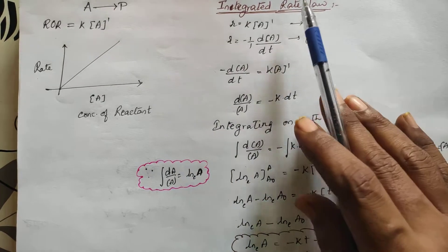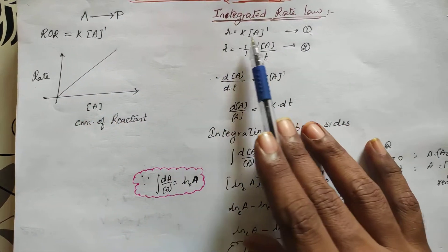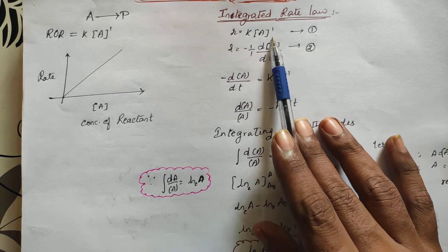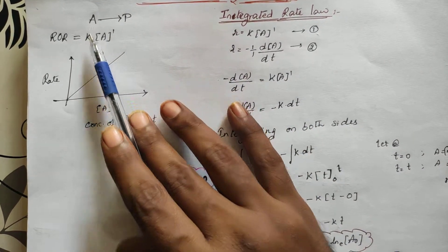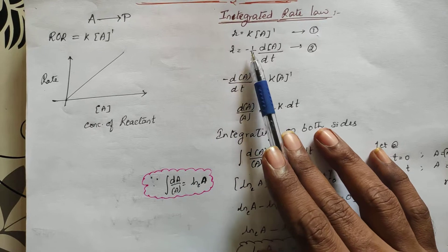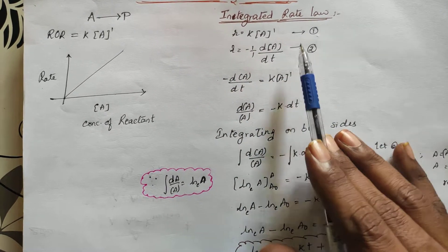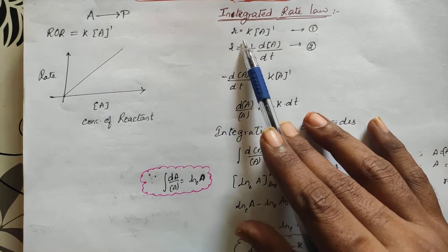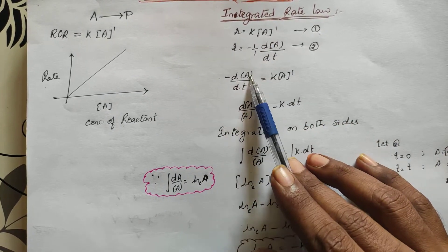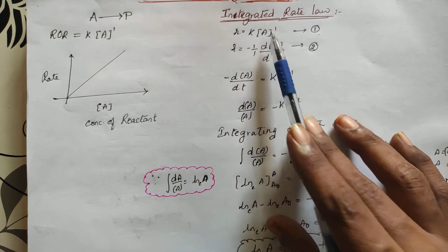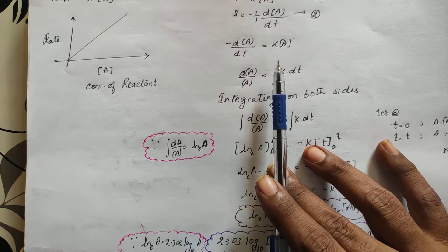Now if you go for the integrated rate law. The rate equation is R = K[A]^1 because it is first order. And from this equation we can write R = −(1/1)(dA/dt). Since these two expressions for rate are equal, we get: −dA/dt = K·A.